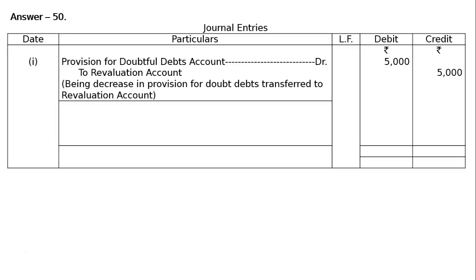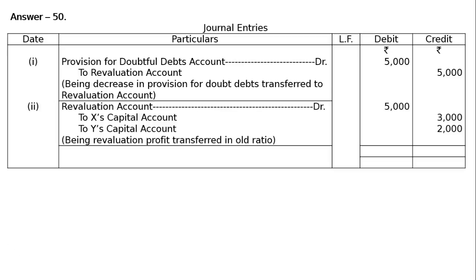Due to this decrease in liability, the firm made a profit of 5,000. There is a balance in the revaluation or profit and loss adjustment account of rupees 5,000. This is to be transferred to partners' capital accounts in the old ratio, as X and Y were partners when this provision was made and now nullified. Revaluation account debited 5,000 — to X capital account 3,000, to Y capital account 2,000 — being revaluation profit transferred in old ratio. Journal total amounts to 10,000 each. This is the final answer.